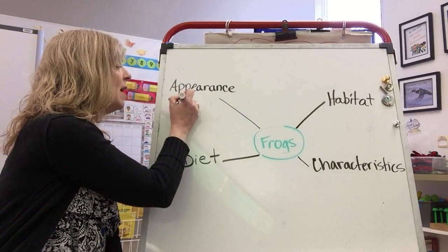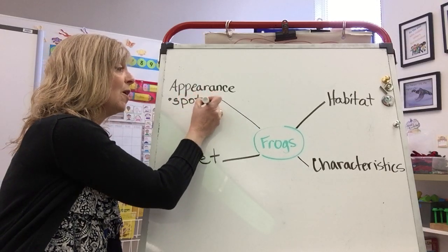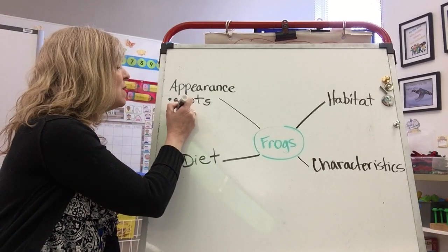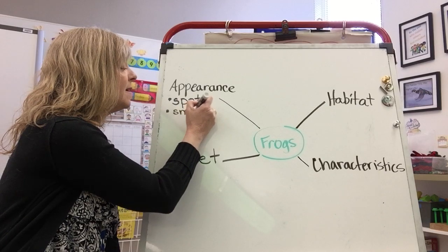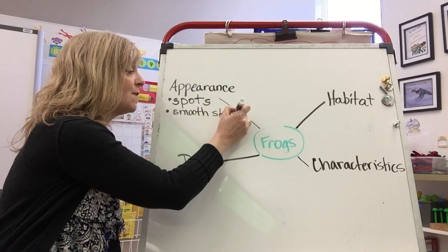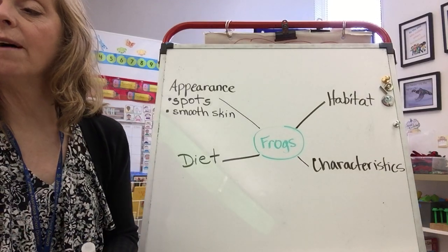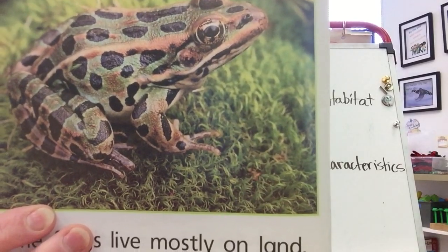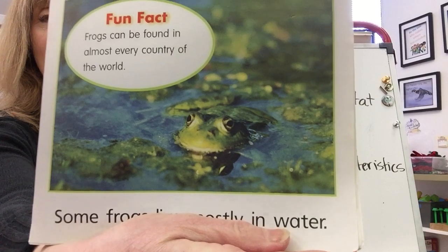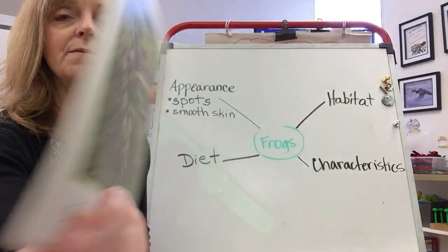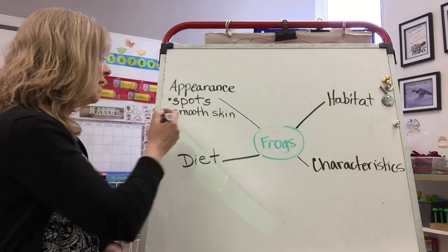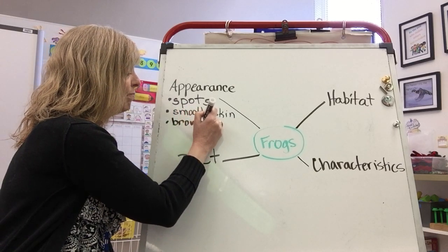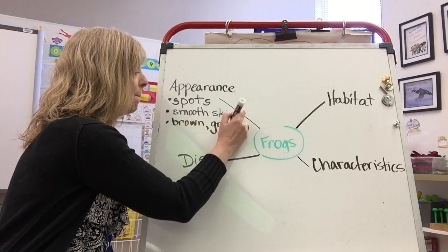I'm going to put 'spots' because some frogs have spots. I'm going to write 'smooth skin' because frogs in Manitoba do have smooth skin. Even though it has colors on it, it's quite smooth. The colors I would say are brown, green, black.